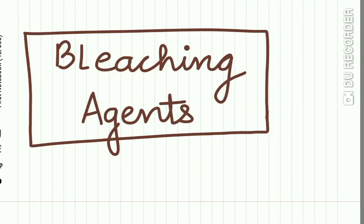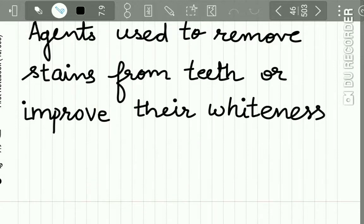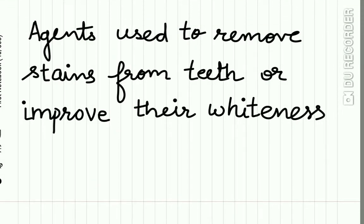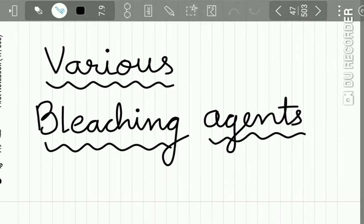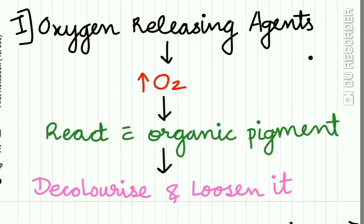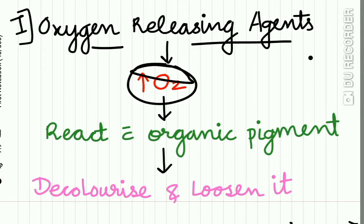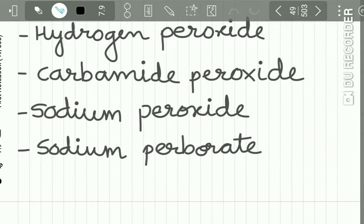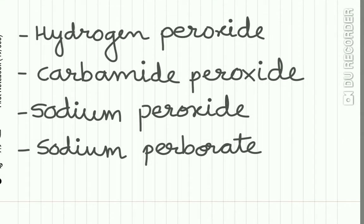Now let's talk about bleaching agents. Bleaching agents are used to remove stains from the tooth and improve its whiteness. The first type is oxygen-releasing agents — these agents release oxygen, which reacts with organic pigment and decolorizes and loosens it. Various oxygen-releasing agents include hydrogen peroxide, carbamide peroxide, sodium peroxide, and sodium perborate.